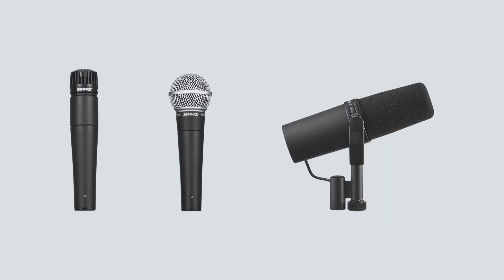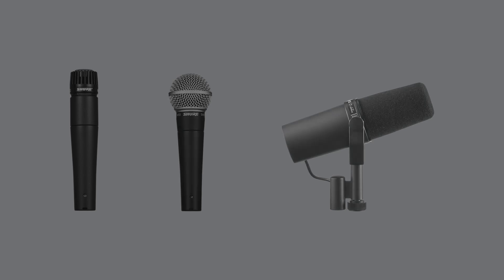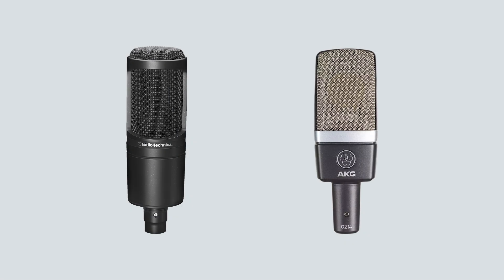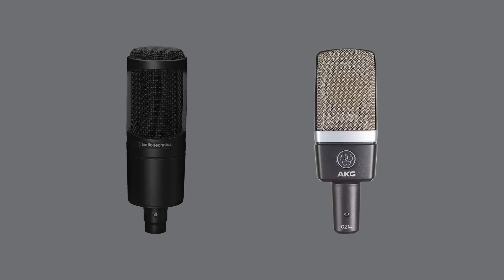Common examples of dynamic microphones include the Shure SM57, SM58, and SM7B. Common examples of condenser microphones include the Audio-Technica AT2020 and AKG C214.